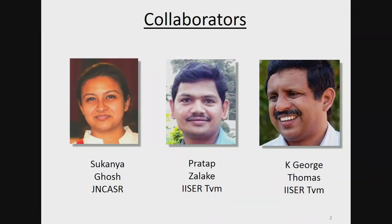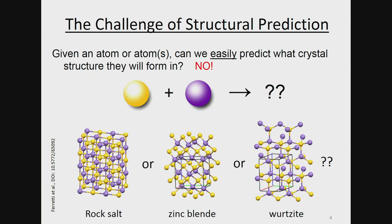My collaborators are my students — Sukanya Ghosh — and the experiments were done by George Thomas at ISA Trivandrum and his PhD student Pratap. Let me introduce the problem. One of the hardest problems in our field is that of structure prediction. For example, if you have a yellow atom and a purple atom that add up to an octet, and you want to know whether they would form the rock salt structure, the zinc blende structure, or the wurtzite structure, it's very hard to predict. We can do a DFT calculation to say which is lowest in energy, but can we just look at the atoms alone and see a pattern? The answer is: it's very hard.